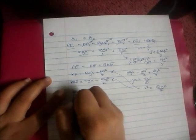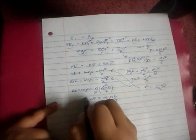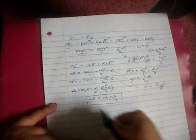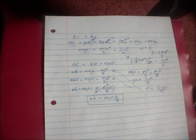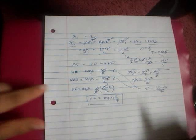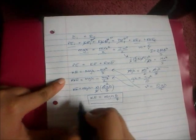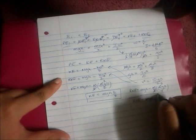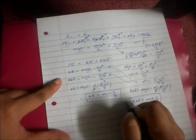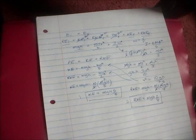Substituting v² = 10gh/7 back into the kinetic energy and rotational kinetic energy expressions gives us our final answers in terms of m, g, and h. That completes Part A.